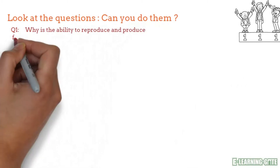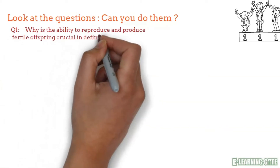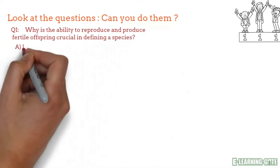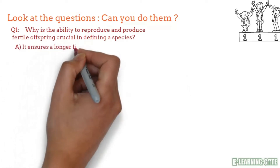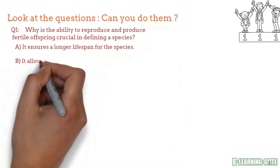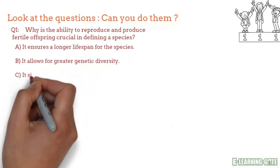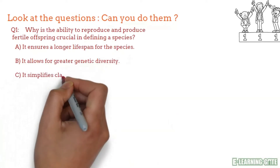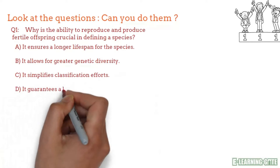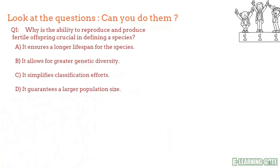Question number one: Why is the ability to reproduce and produce fertile offspring crucial in defining a species? Option A: It ensures a longer lifespan for the species. Option B: It allows for greater genetic diversity. Option C: It simplifies classification efforts. Option D: It guarantees a larger population size. Think and note down your answer.